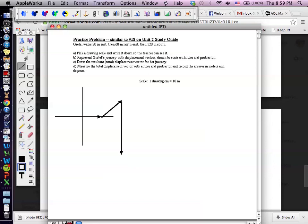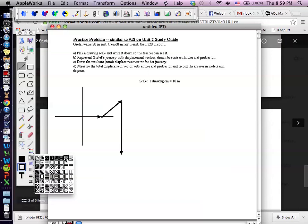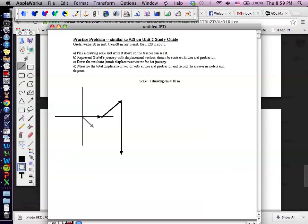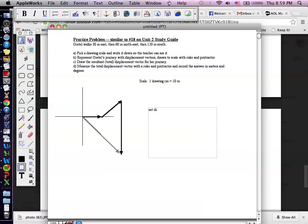Draw the resultant total displacement vector. Displacement is where she started to where she finished. So let me get a different style for a vector here. Where she started to where she finished. And you must have an arrow at the end of this displacement vector. It's not just a line, it shows direction. This is the net displacement vector.